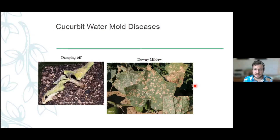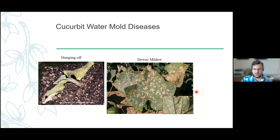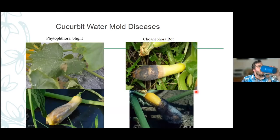We actually have a nationwide network of land grant universities and pathologists that track downy mildew as it moves from the south — where they have year-round production in Texas and Florida — and they'll actually track the progression of it and have central plots tracking this disease as it moves up every year. They're always hoping to slow it down so that people can get their harvest off beforehand. With climate change, our winters and summers getting warmer, it wouldn't be unheard of to start seeing this show up a little sooner in the season and start becoming a bigger issue for us.